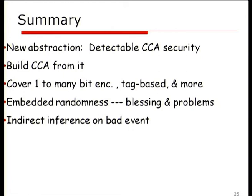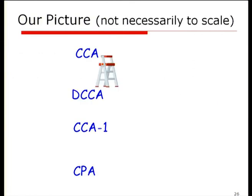In summary, we create a new abstraction called Detectable CCA Security. We can build full chosen ciphertext security from it. It covers multiple things like one-bit to many-bit encryption, tag-based encryption, and more. The main technique is embedded randomness — both a blessing and a problem — and the way to handle it is an indirect argument, which I think is one of the most interesting parts of the work. We've built this ladder between Detectable CCA and Full CCA; the other gaps in the bigger picture remain unsolved, and may be interesting to revisit.